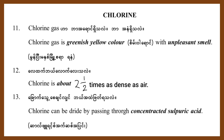Chlorine is greenish yellow in color with an unpleasant smell. Chlorine is about 2.5 times as dense as air. Chlorine can be dried by passing through concentrated sulfuric acid.